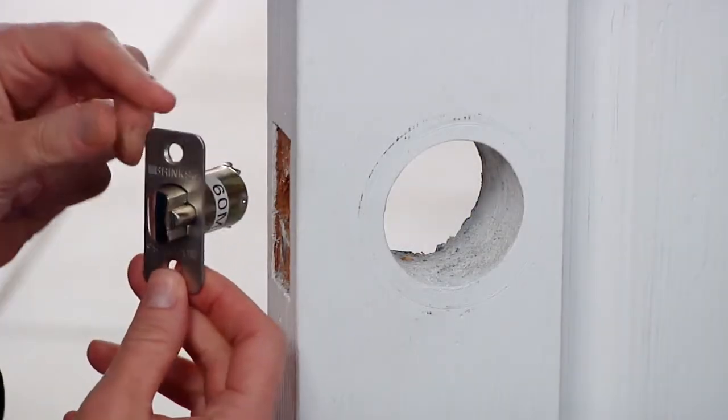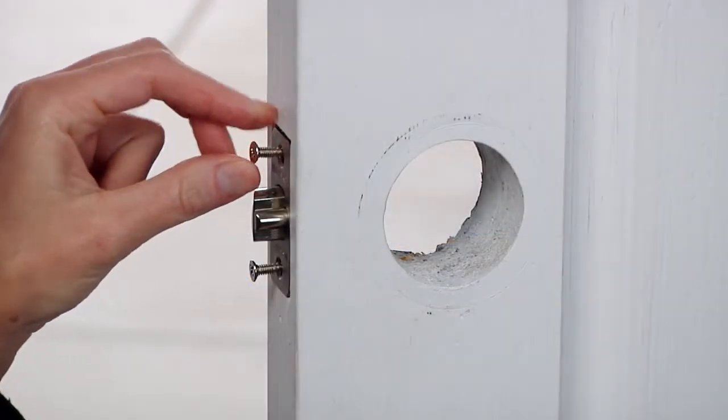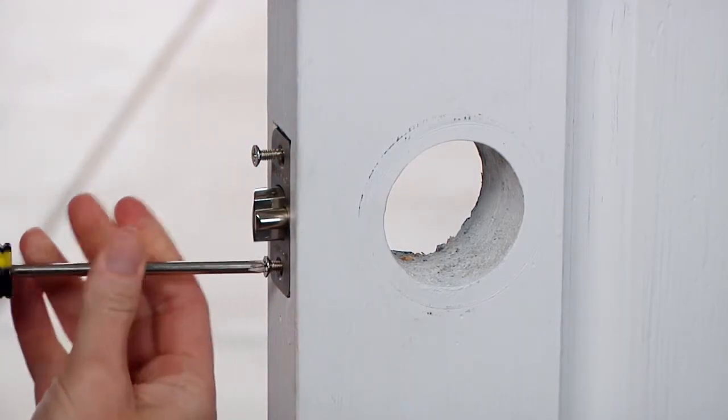Install the correct latch into the 1 inch hole on the edge of the door. Make sure the angled face of the latch is facing the door jamb. Use a Phillips screwdriver and two screws to install the latch on the door but do not tighten the screws completely.